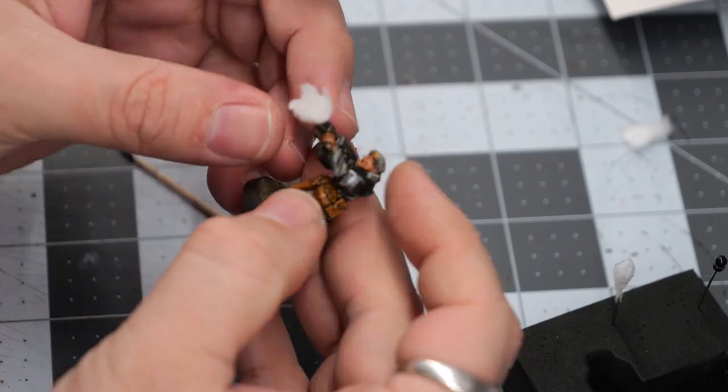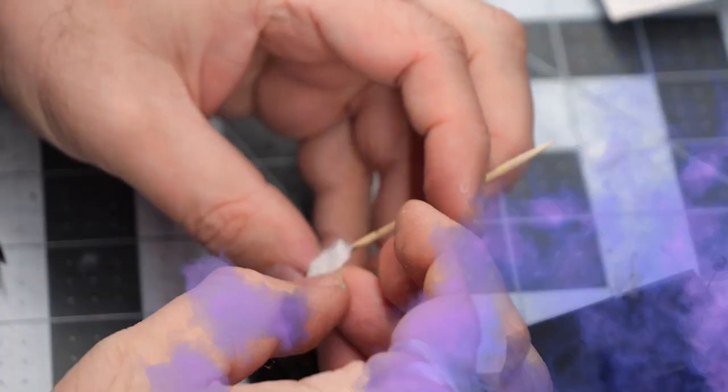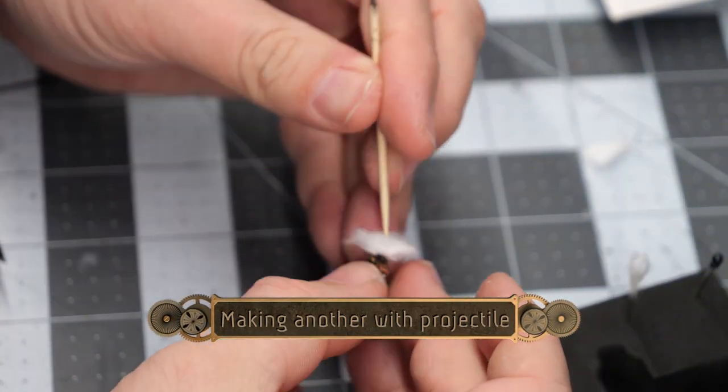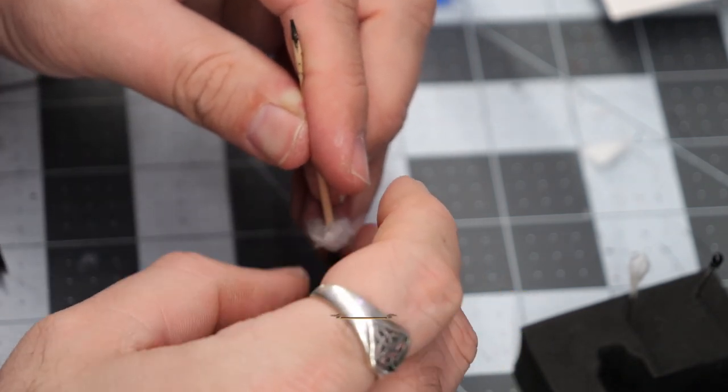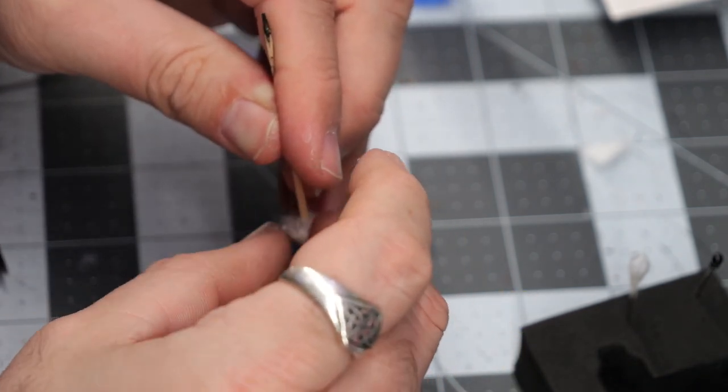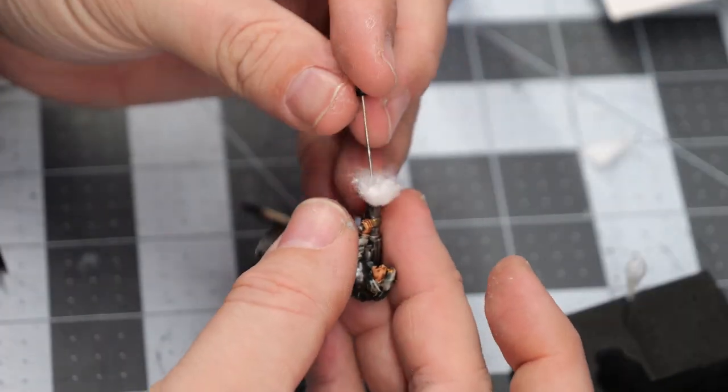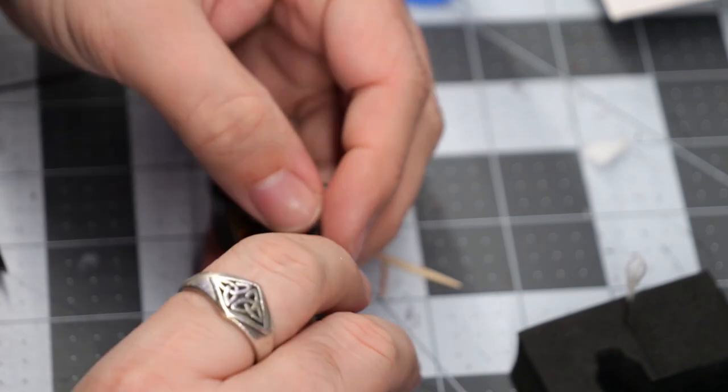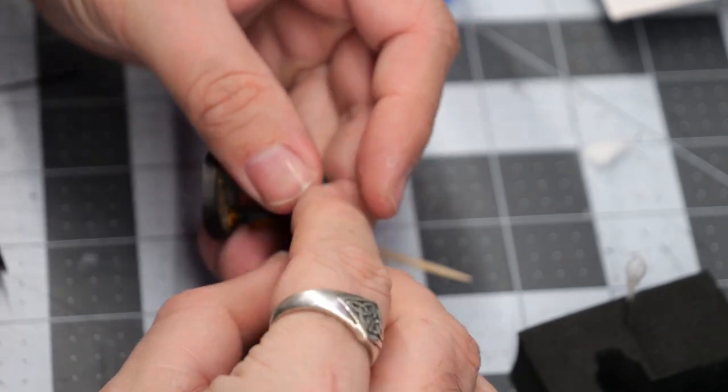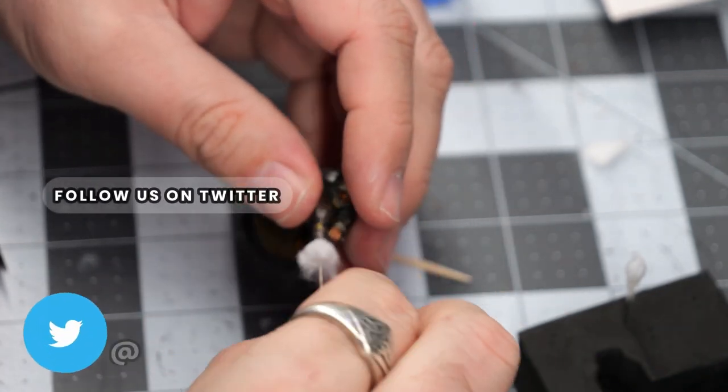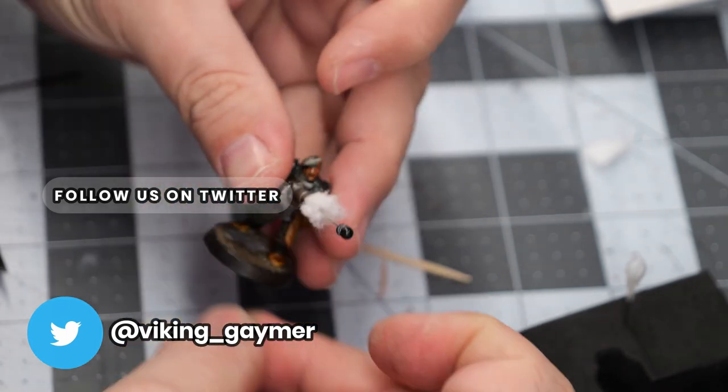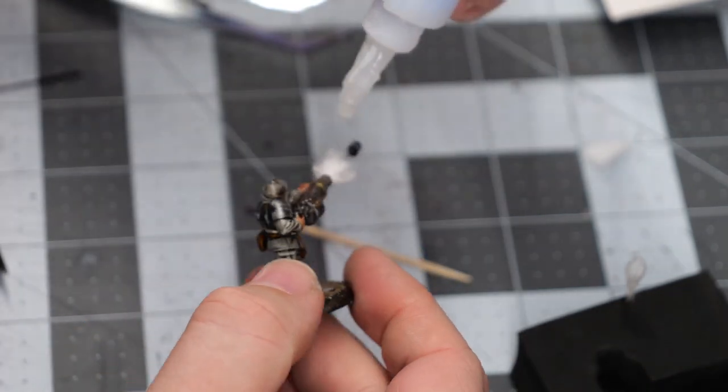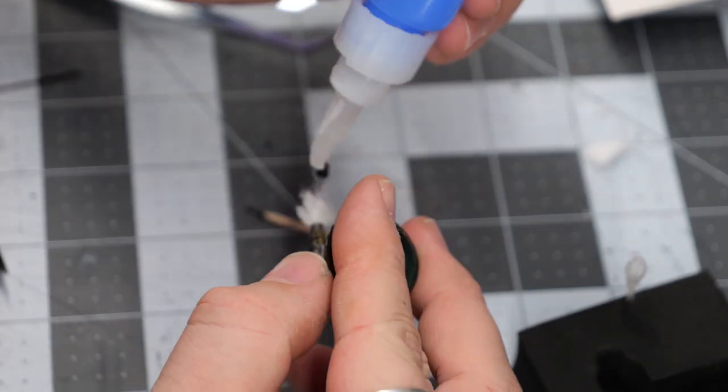Same method: we're just going to create the plume of smoke, and then once that's been formed, we're going to wedge the projectile into place and then very carefully remove any wispy extra bits of the cotton to make sure it looks right, and then start super gluing.